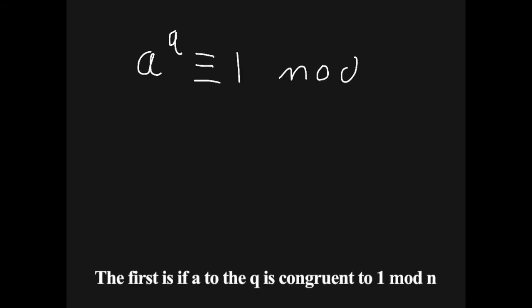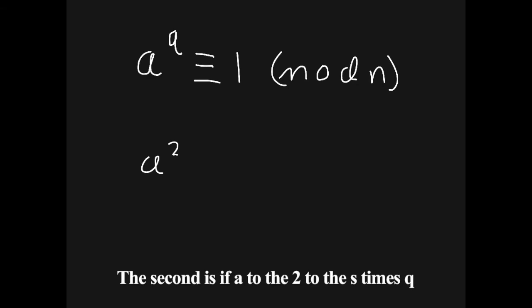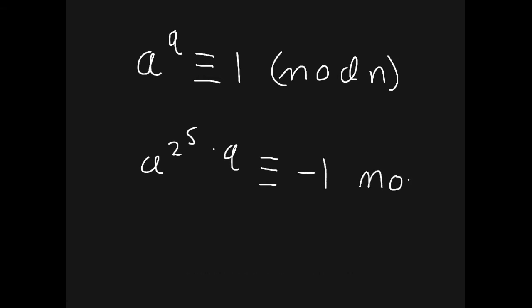Now that we have our k and q, we can begin testing for two cases. The first is if a to the q is congruent to 1 mod n. The second is if a to the 2 to the s times q is congruent to negative 1 mod n, where s is a randomly selected integer between k minus 1 and 0.